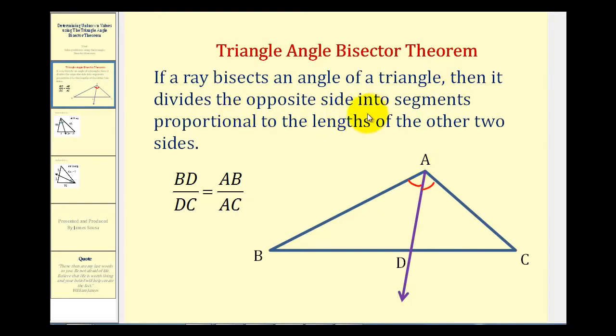then it divides the opposite side into segments proportional to the lengths of the other two sides of the triangle. Meaning the length of BD to the length of DC will be equal to the ratio of the length of AB to the length of AC.